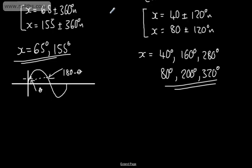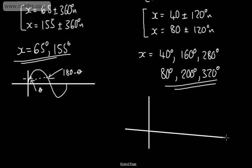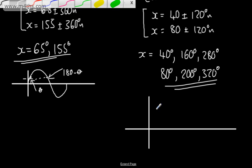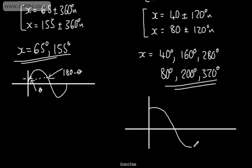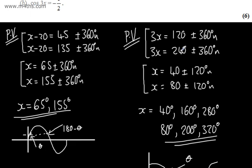So we've got six solutions in the given interval. To illustrate the symmetry: the cosine curve shows that if we have a value theta, by symmetry we also have 360 minus theta giving the same cosine value. So 120 degrees and 360 minus 120 equals 240 degrees are our two base angles.